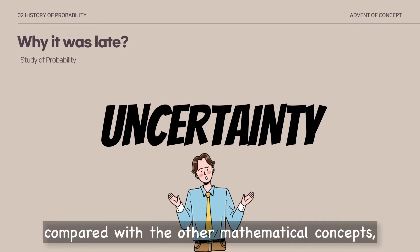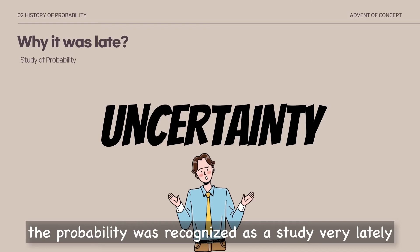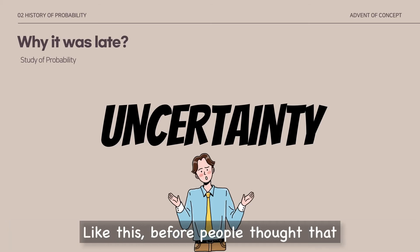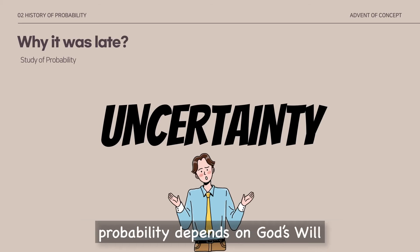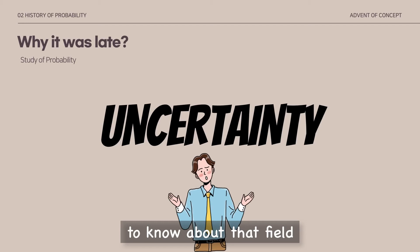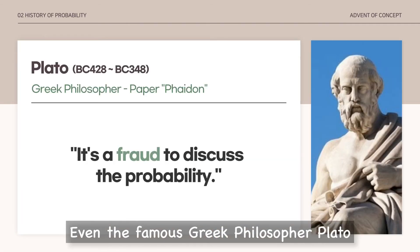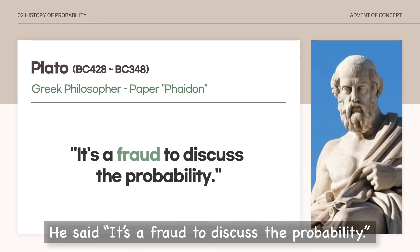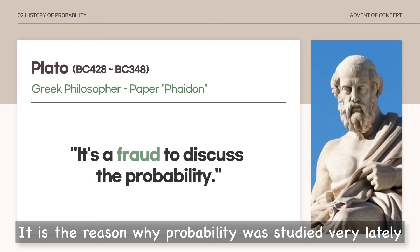Compared with other mathematical concepts, probability was recognized as a study very lately. Why? Because probability belongs to the field of uncertainty. Before, people thought that probability depends on God's will, so they thought they were not qualified to know about that field. Even the famous Greek philosopher Plato mentioned this, saying 'It is a fraud to discuss probability.' That is the reason why probability was studied very late.